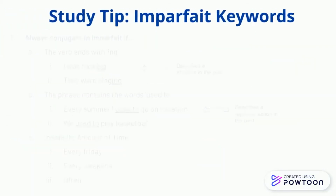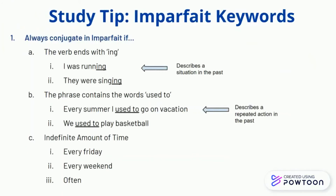Here are a few imparfait keywords. You must always conjugate in imparfait if the verb ends with -ing, because it describes a situation in the past, or if the phrase contains the words 'used to', since it also describes a repeated action in the past, and lastly, for an indefinite amount of time. In all these cases, you must conjugate in imparfait.